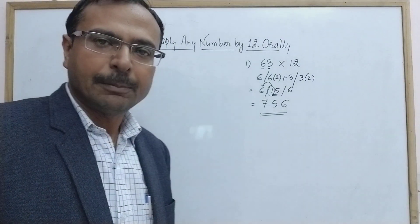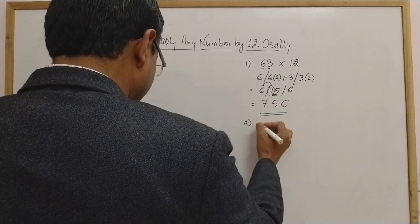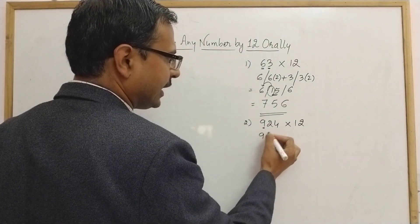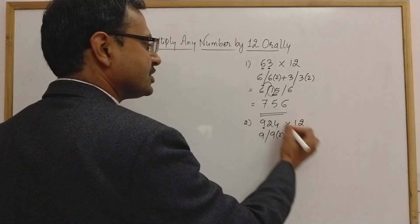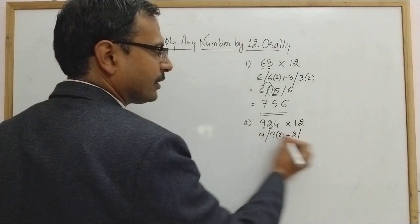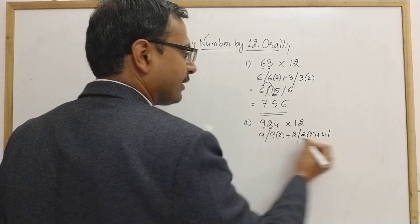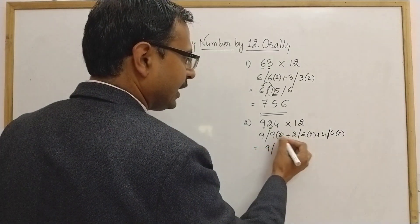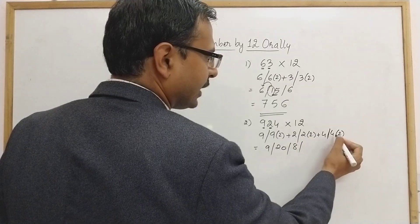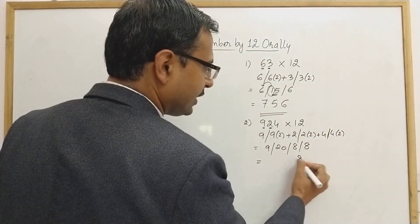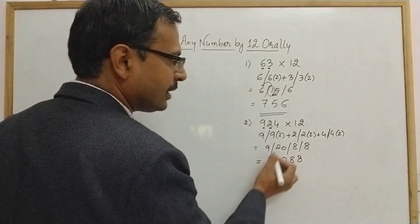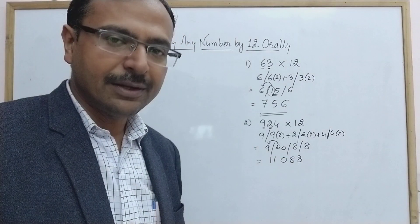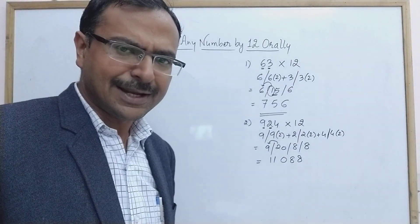Let's try another example: 924 × 12. First digit is 9, retain 9. Then double of 9 plus the next digit 2: 18 + 2 = 20. Then double of 2 plus the next digit 4: 4 + 4 = 8. Finally, double of 4 with nothing on the right: 8. Writing from the right: 8, 8, then 20 gives 0 retained and 2 carried forward, so 9 + 2 = 11. The answer is 11088.